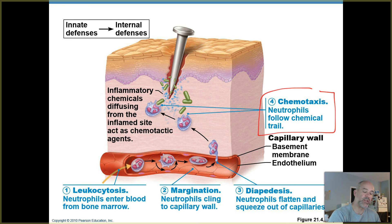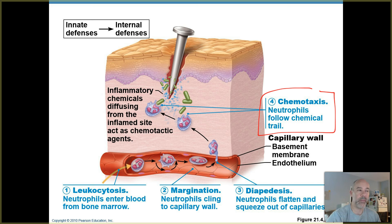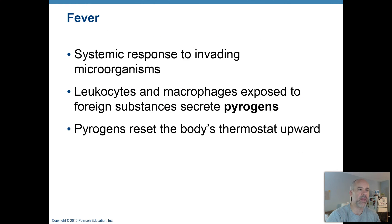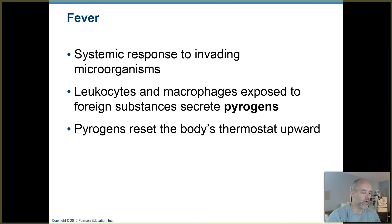Chemotaxis refers to following a trail of breadcrumbs — except in this case the breadcrumbs are chemicals. Your damaged cells and tissues, your mast cells stationed in the tissues, and chemicals given off by bacteria or other microorganisms in the injured tissue act as chemical signals that attract neutrophils and other white blood cells to the location where inflammation is occurring. That's how neutrophils find the bacteria — they undergo chemotaxis, following a chemical trail.